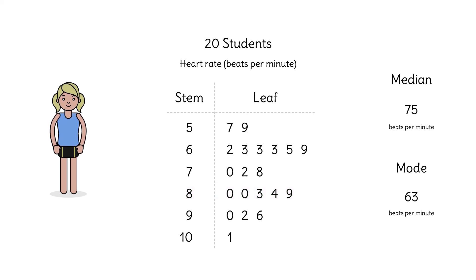Stem and leaf plots can help us find the median and mode, and also reveal patterns in the distribution of data. Use stem and leaf plots when you want a simple yet powerful way to organize and visualize your data.